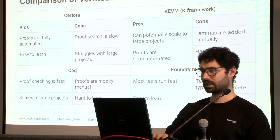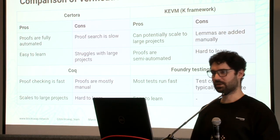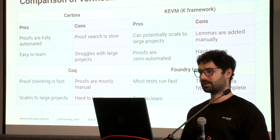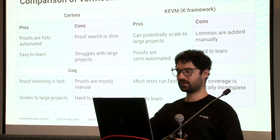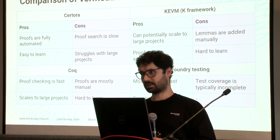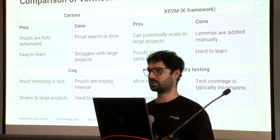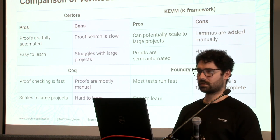Another way of verifying is to use testing — in particular, Foundry testing for Solidity. Tests run super-fast and are easy to write, but the problem is that tests are typically incomplete. With proofs we prove the specification correct; with testing we only test the particular scenarios we have set up. However, you cannot really get away from testing. It is very fast to write a test, and before we start with formal verification we can write tests to find as many bugs as possible. This is important because formalizing something first and then discovering a bug is very expensive — you have to fix both the code and the formalization.